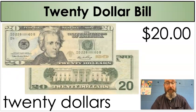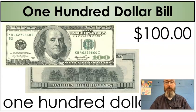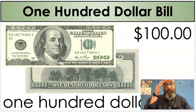We have our twenty dollar bill. It's worth twenty dollars. This is how we write it. The last one we're going to go over is our hundred dollar bill, and it is worth one hundred dollars.